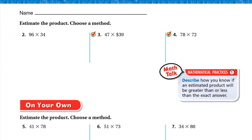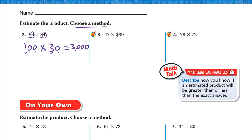Number two: estimate the product using any method. Let's use rounding: 96 × 34. For 96: to the right of the 9 we have 6, which is a strong digit, so 90 becomes 100. For 34: to the right of the 3 we have 4, which is weak, so we keep it 30. So 100 × 30: we write three zeros and 1 × 3 = 3, giving us 3000.